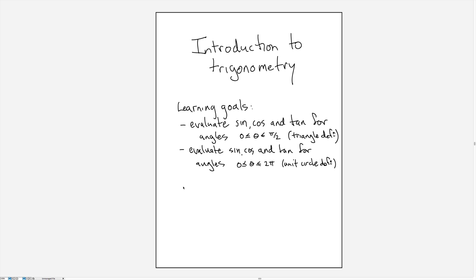Introduction to trigonometry. The learning goals for this video include learning how to evaluate the sine, cosine, and tangent for angles between 0 and pi over 2, and I'll go through this defining these functions using the triangle definition. You should also know how to evaluate sine, cosine, and tangent for angles between 0 and 2 pi, and that will require that we define sine, cosine, and tangent on the unit circle. I'll only go through these definitions for sine and cosine, and then tangent will be defined in terms of those.